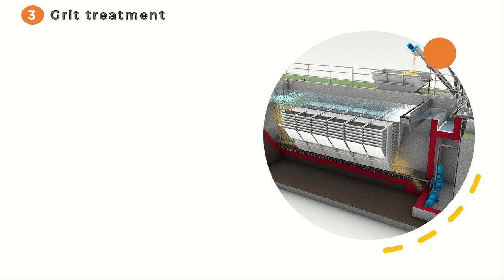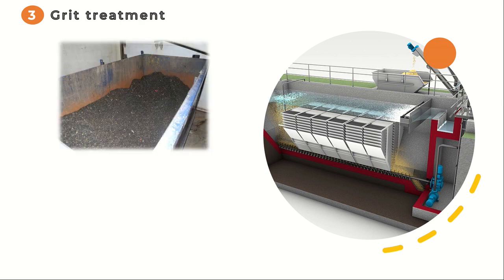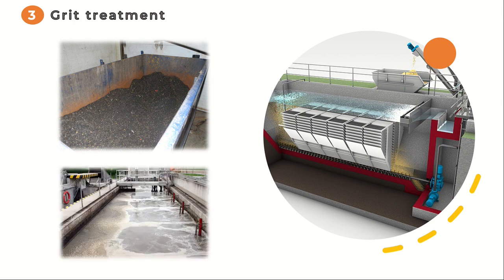The third step involves grit and sludge removal, a very important step in the wastewater treatment plant. The wastewater flows into sedimentation tanks where heavy particles such as sand and grit settle to the bottom. The aerated grit trap's task is not only to reliably remove the grit from the wastewater flow, but also to retain grease to prevent floatable particles from settling or overflowing in downstream treatment systems.